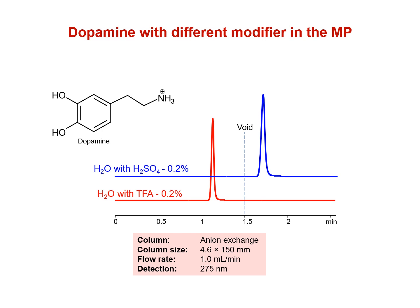The only significant difference between these ionic modifiers — TFA and sulfuric acid — is the number of negative charges of each acid's dissociated ion in solution. The sulfate ions have a minus two charge while the TFA ions have only a minus one charge.